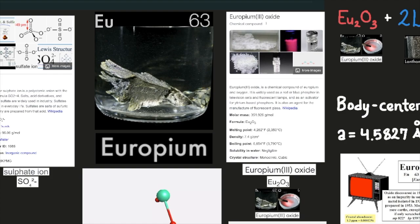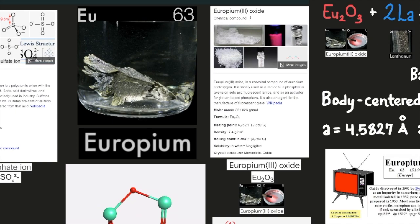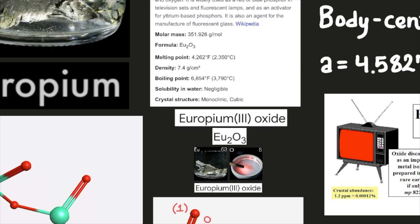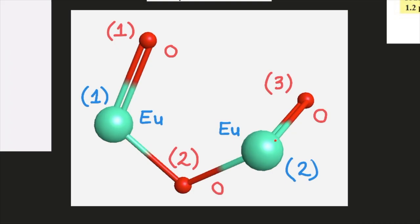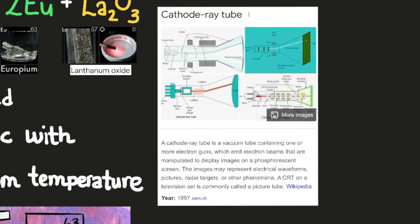Europium 3 oxide. Europium 3 oxide is a chemical compound of europium and oxygen. It is widely used as a red or blue phosphor in television sets and fluorescent lamps and as an activator for yttrium-based phosphors. It is also an agent for the manufacture of fluorescent glass, according to Wikipedia. Its molar mass is 351.926 grams per mole. Its formula is EU2O3. Its melting point is 4,262 degrees Fahrenheit or 2,350 degrees Celsius. Its density is 7.4 grams per centimeters cubed. Its boiling point is 6,854 degrees Fahrenheit or 3,790 degrees Celsius. Its solubility in water is negligible. Its crystal structure is monoclinic cubic. Europium 3 oxide. Two atoms of europium bound to three atoms of oxygen. Here we have europium atoms and oxygen atoms.